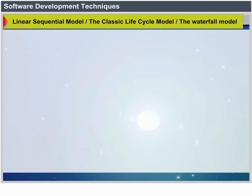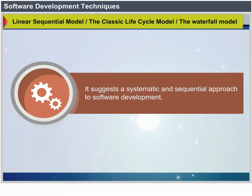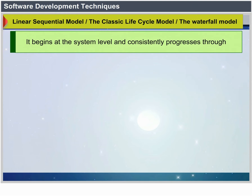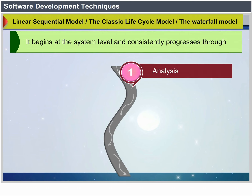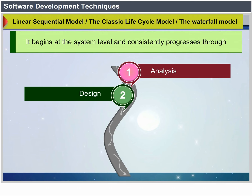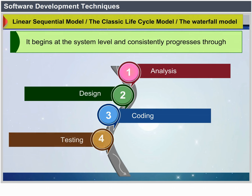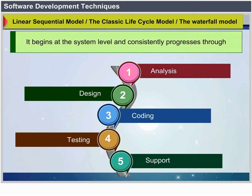Linear Sequential Model — the Classic Life Cycle Model or the Waterfall Model. It suggests a systematic sequential approach to software development. It begins at the system level and progresses through analysis, design, coding, testing and support.